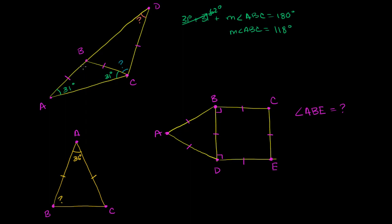So this angle right over here is 118 degrees. This angle right over here is supplementary to that 118 degrees, so that angle plus 118 is going to be equal to 180. We already know that's 62 degrees — 62 plus 118 is 180. So this right over here is 62 degrees.